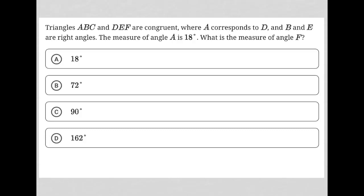So this question says triangles ABC and DEF are congruent. I'm going to draw them: triangle ABC, triangle DEF. They're congruent, which means everything about them is exactly the same.